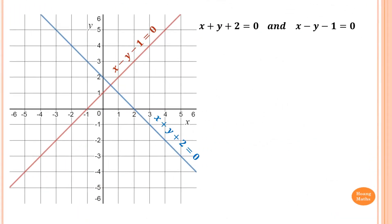Please stop the video and do this one yourself. The point of intersection is here. The x value is a half, so x = 1/2. Looking across, the y value is 1 and a half, so y = 1.5.